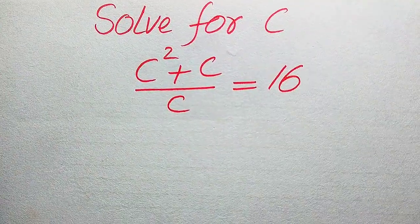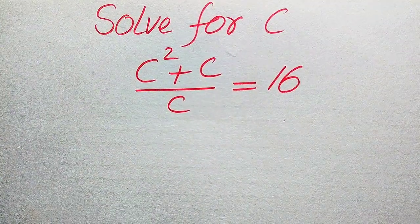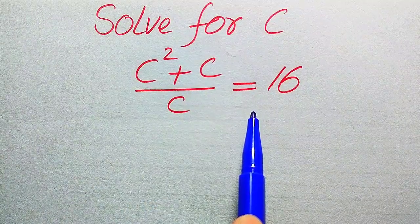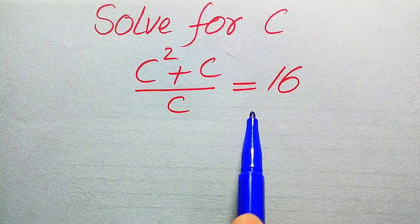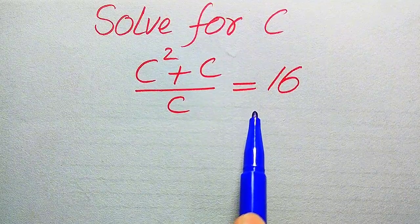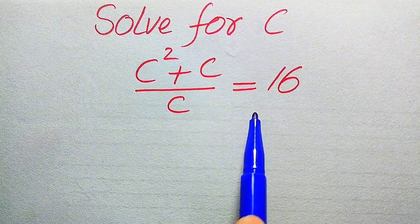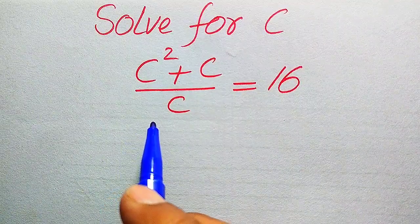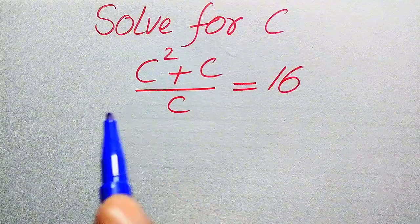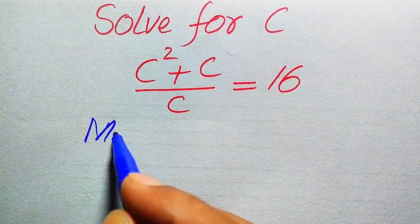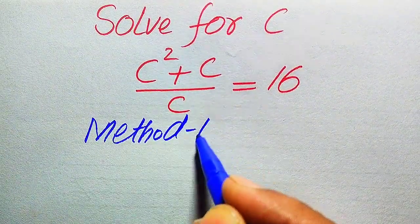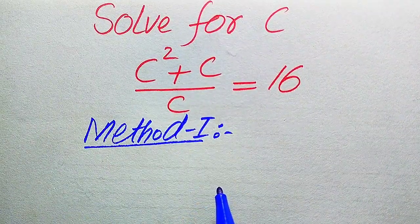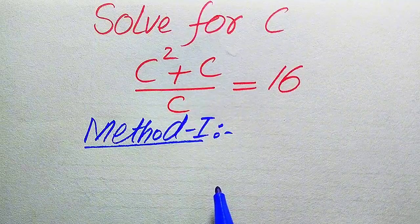Hello everyone. How to solve this problem for the values of c, if we have (c² + c) divided by c equals 16? We solve this problem for all values of c. First we need to find all the roots of this equation, and at the end we will verify which roots are solutions and which are extraneous roots. We solve this problem using two methods.